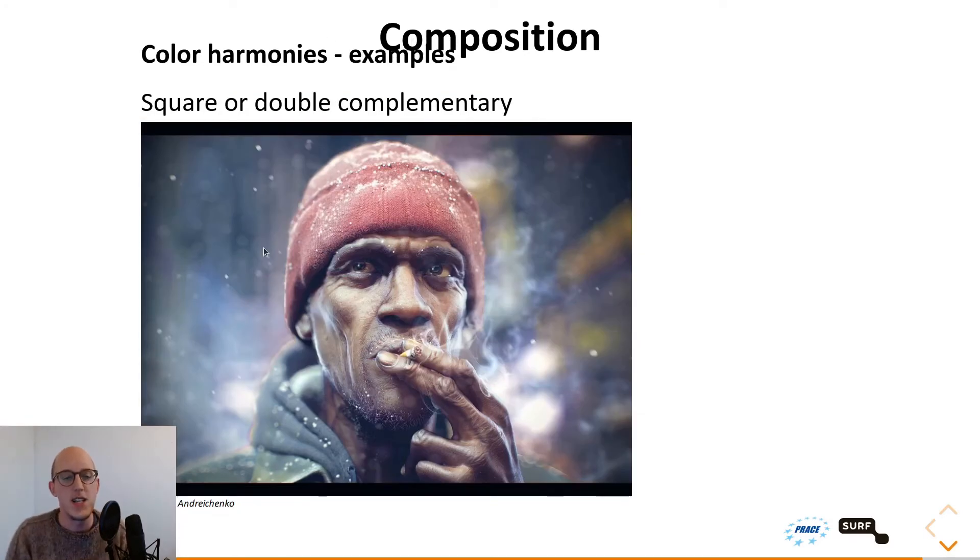And another great example is this image. This is a square or double complementary. Here you have red and green, which is one complementary, but you also have yellow and blue, bluish. This way you have a complementary in the foreground and a complementary in the background. And it just overall gives a very nice and well-balanced image. I really like this image when it comes to color harmonies.